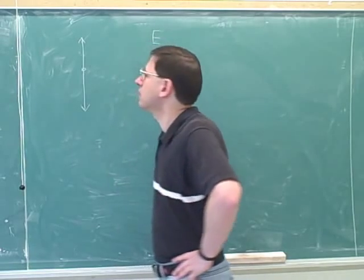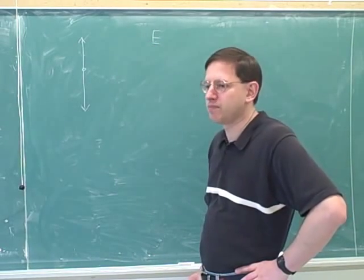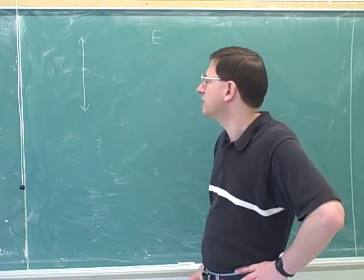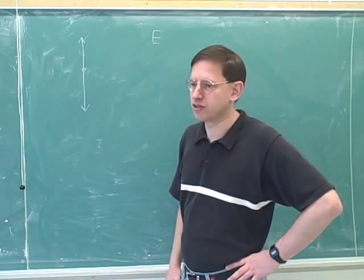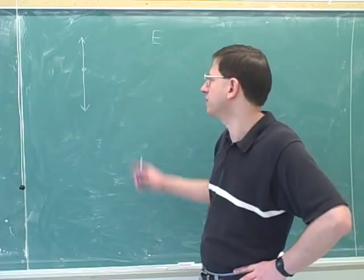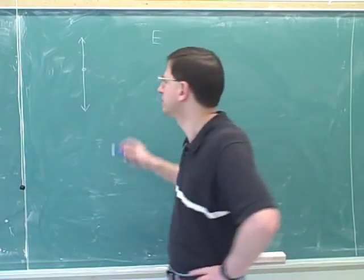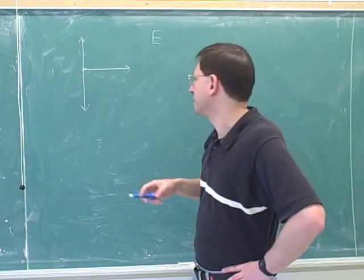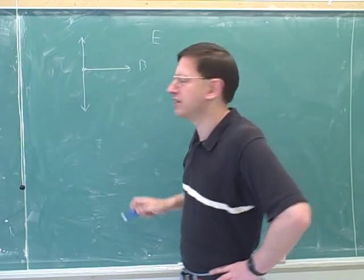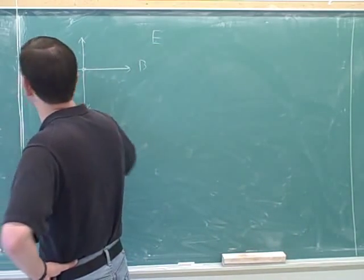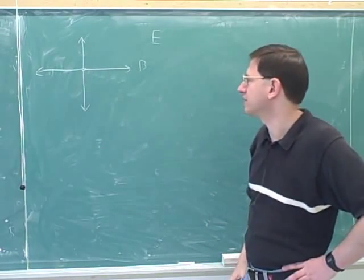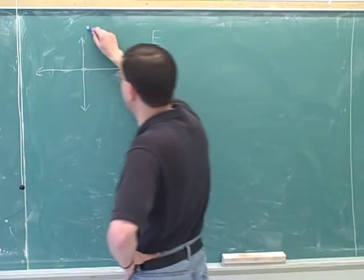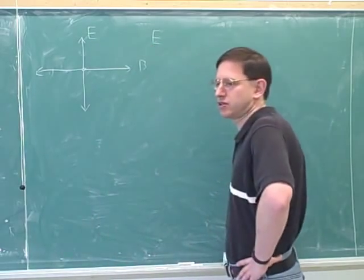We know there's also an oscillating magnetic field as well, and the magnetic field is perpendicular to the electric field. For example, I could draw the magnetic field oscillating in the plane of the board — at one point the magnetic fields could be pointing right, and then half a cycle later they'd be pointing left, then right, then left. The key thing is that the electric and magnetic fields are oscillating perpendicular to each other.